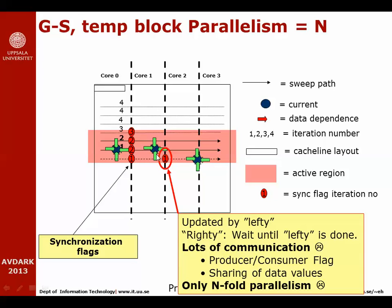The value written into these flags is the iteration age of the data element to the left. By doing this we do produce lots of synchronization communication between the cores, but it is a kind of communication we refer to as producer-consumer communication. The core to the left is the one that writes the value, the core to the right is the one that reads the value — one writer and one reader, that never changes. So the left produces and the right consumes. With this way of dividing the work we only have n-fold parallelism if this is an n by n matrix.